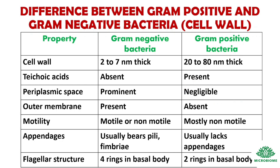Next, differences between gram-positive and gram-negative bacteria. Regarding cell wall thickness: gram-negative bacteria have a cell wall 2 to 7 nanometers thick, while gram-positive bacteria have one 20 to 80 nanometers thick. Teichoic acid is absent in gram-negative bacteria but present in gram-positive bacteria. Periplasmic space is prominent in gram-negative bacteria and negligible in gram-positive bacteria. The outer membrane is present in gram-negative bacteria and absent in gram-positive bacteria.